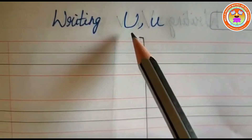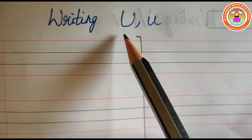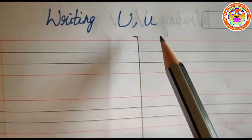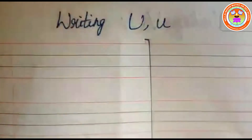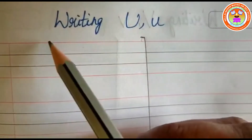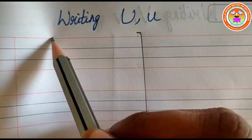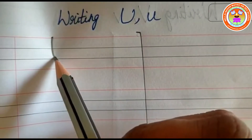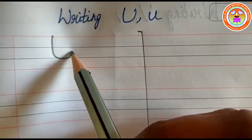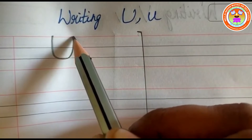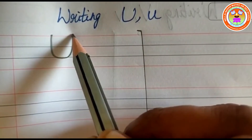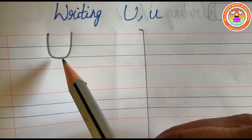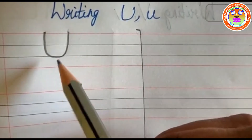This is capital letter U and this is small letter U. For writing capital letter U, touch on the first red line and then put one upward curve like this. It should touch on the second blue line. Again go up like this and then you have to come and stop it on the first red line. This is capital letter U.